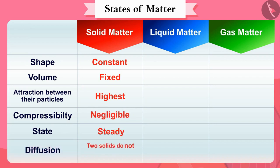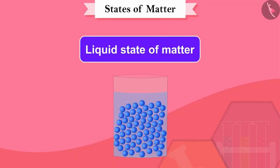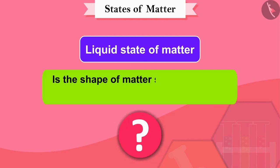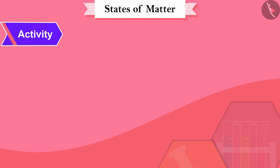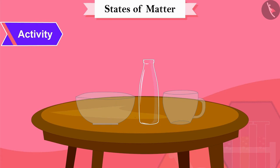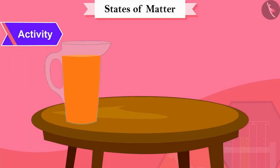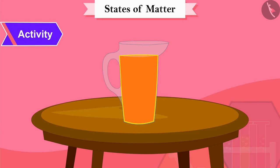Now let us see the liquid state of matter. Like solid matter, is the shape of matter stable and fixed in the liquid state? Let's find out through an activity. There are three different sizes of glass utensils. There is juice in a jug, and we can see that the juice has taken the shape of the jug.